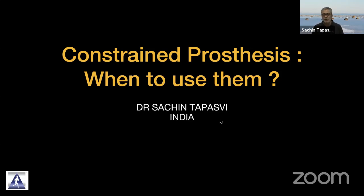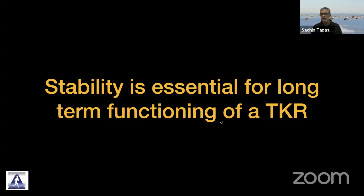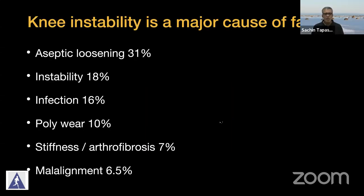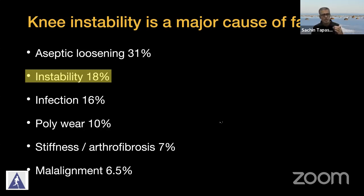One of the important aspects that we always use in all our surgeries, which are away from the standard mild to moderate deformity, is the role of constraint. Stability is absolutely essential if we want to have a long-term functioning total knee replacement. Any instability is a major cause of failure. Knee instability accounts for the second most common reason for revision in today's scenario — recent papers quote that instability has gone a notch higher than infection. In our country, infection is still the major cause of revision, but instability is not lagging far behind.